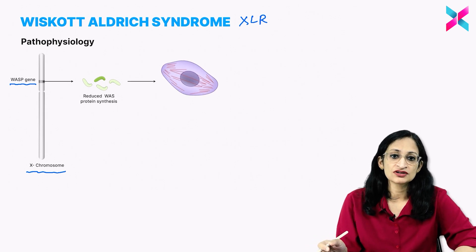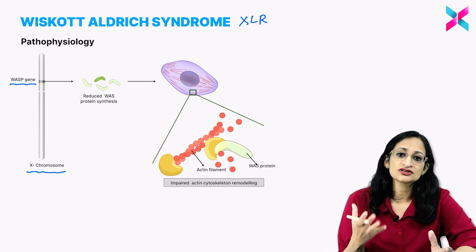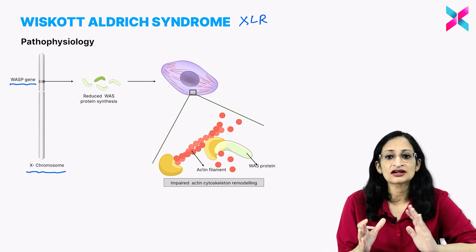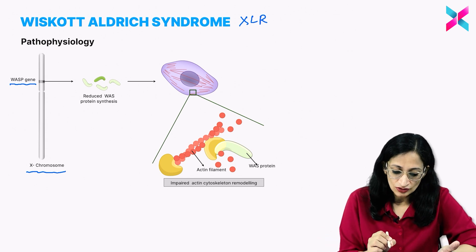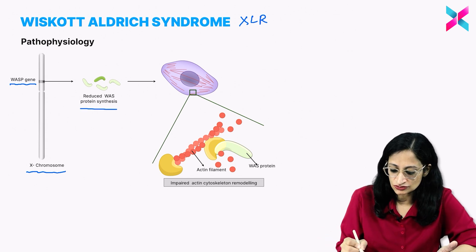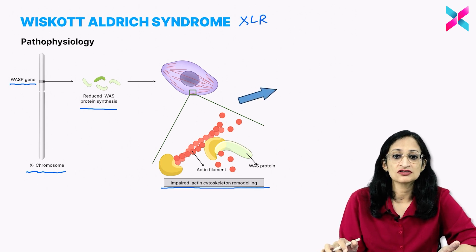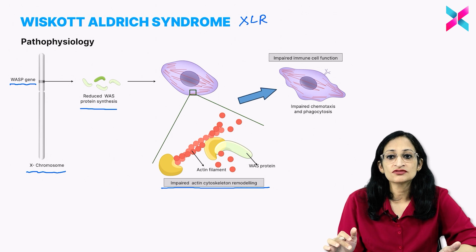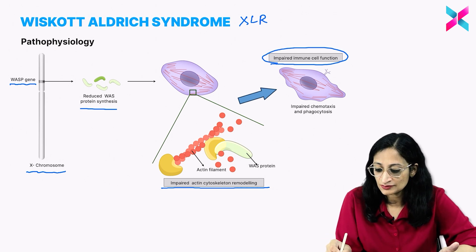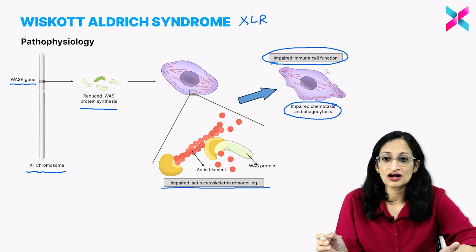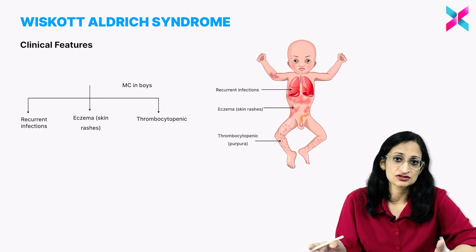The function of the Wiskott-Aldrich syndrome protein is to help in actin cytoskeleton remodeling. Reduced WASP protein synthesis will lead to impaired actin cytoskeleton remodeling during cell division. This remodeling will not take place properly, resulting in impaired immune cell function — impaired chemotaxis and phagocytosis — causing immunodeficiency in the child.